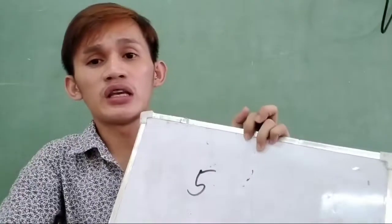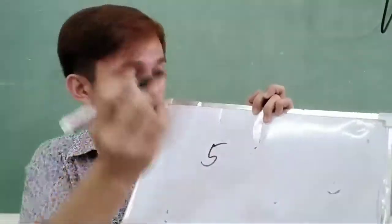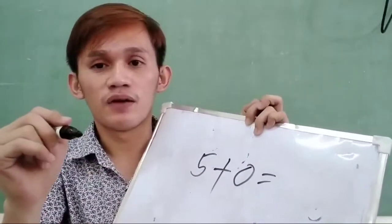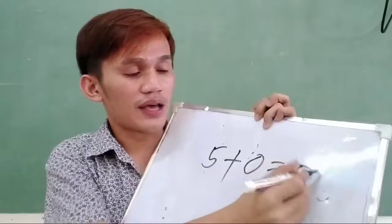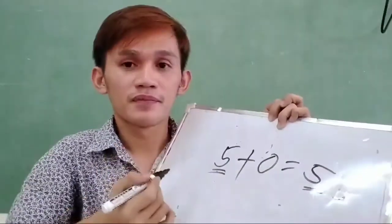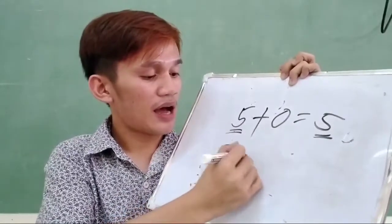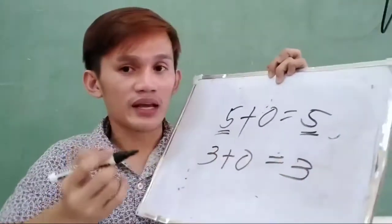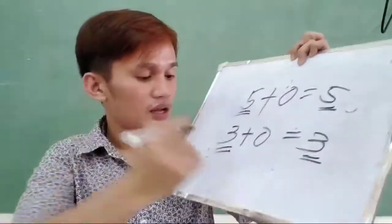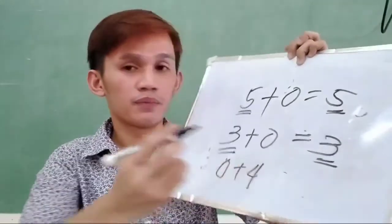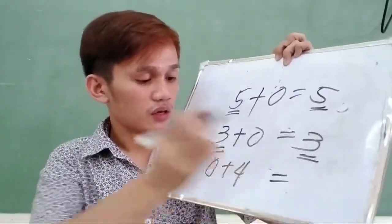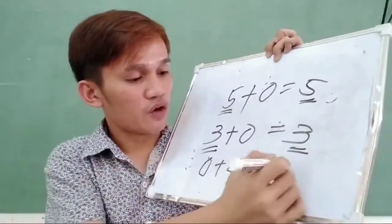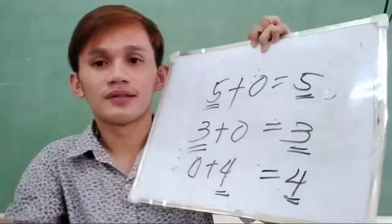Is that true? Let us see. Let us have this example. Like for example, number 5. From the definition of the property, the sum of a number and 0: 5 plus 0 is the number itself. 5 plus 0 is 5. Another example: 3 plus 0 is 3. Like for example, 0 plus 4 — a number added by 0 — the answer will be 4, or the number itself. As simple as that.